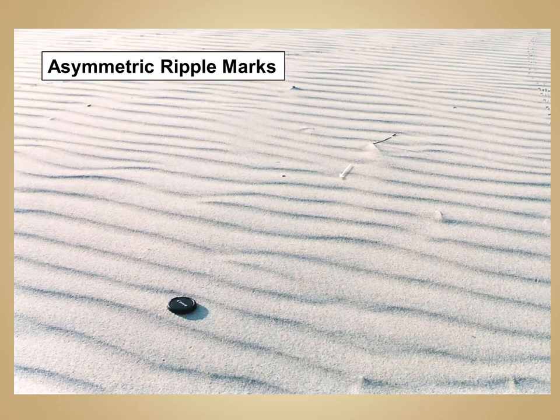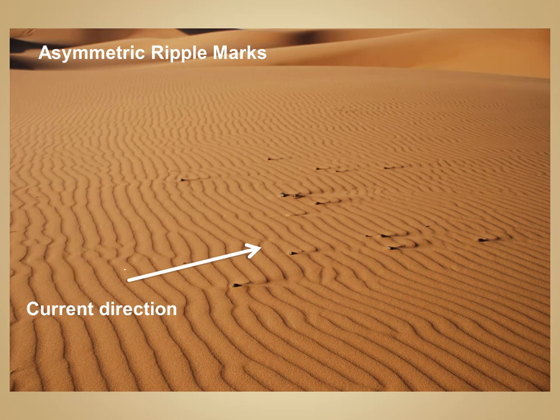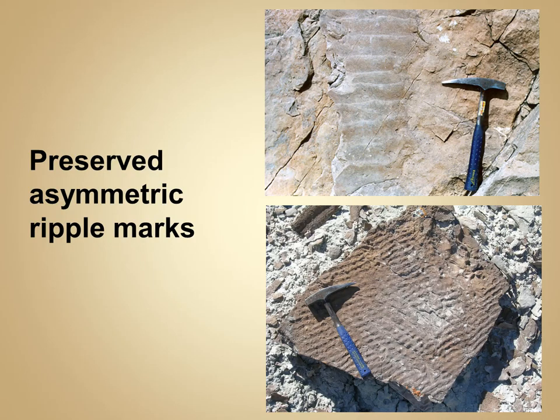Asymmetric ridges form when you have one dominant current direction. These are ridges with a steeper side on the down-current direction and a more shallow side on the up-current direction. In this photograph is an example of asymmetric ripple marks from a sand dune in Morocco. The wind direction is predominantly from left to right. On the windward side of the ripple mark is a much shallower slope, versus the downwind direction which has a much steeper slope. Asymmetric ripple marks can also be buried and preserved on bedding planes in the rock record, and you can determine current direction because of that asymmetric ridge shape — the steep slope indicates the down-current direction.